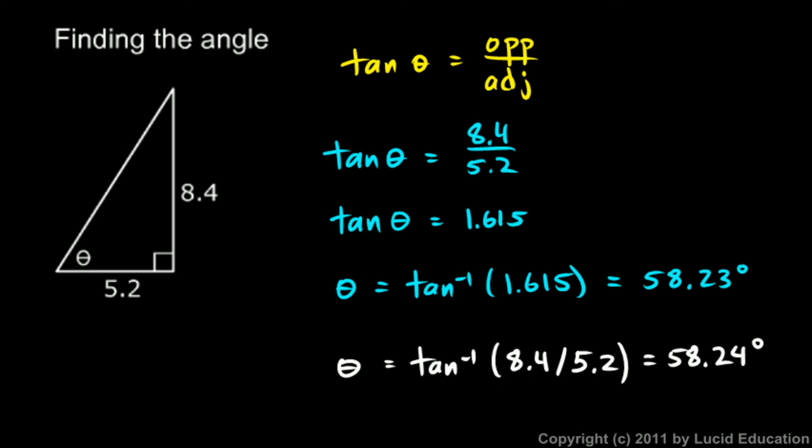If you do it like this, the calculator internally solves this in two steps: it does this division, gets a number, and then takes the inverse tangent of that number. The calculator does these two steps that we did—it does the division and gets a number, and then does the inverse tangent of the number. But the calculator doesn't round when it does this division. It will do 8.4 divided by 5.2, and it will take this number to as many digits of accuracy as it can deal with internally in its own memory and circuitry, and then it will do the inverse tangent of that.